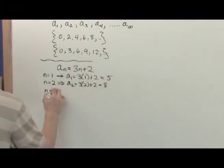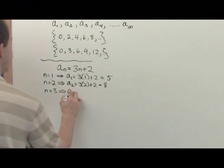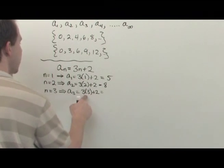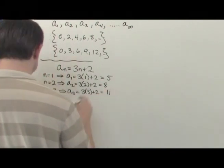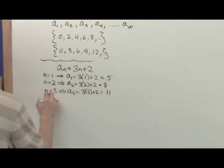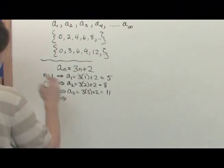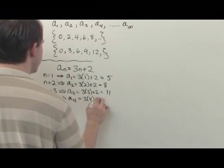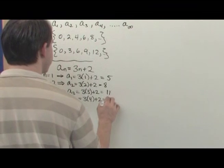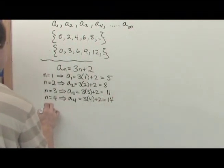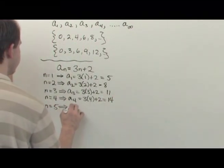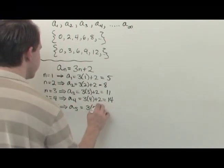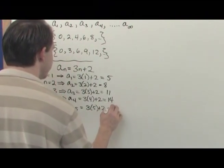The third element is a sub 3, which is 3 times 3 plus 2 — 3 times 3 is 9, plus 2 is 11. And n equals 4, that's a sub 4: 3 times 4 plus 2, 3 times 4 is 12, plus 2 is 14. And since the problem said what are the first 5 elements of the sequence, the fifth is 3 times 5 plus 2 — 3 times 5 is 15, plus 2 is 17.